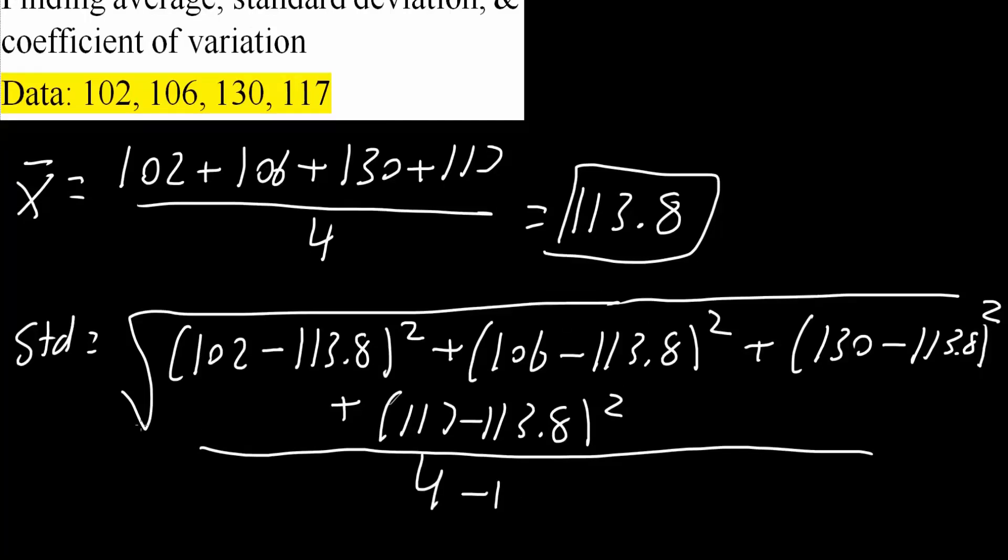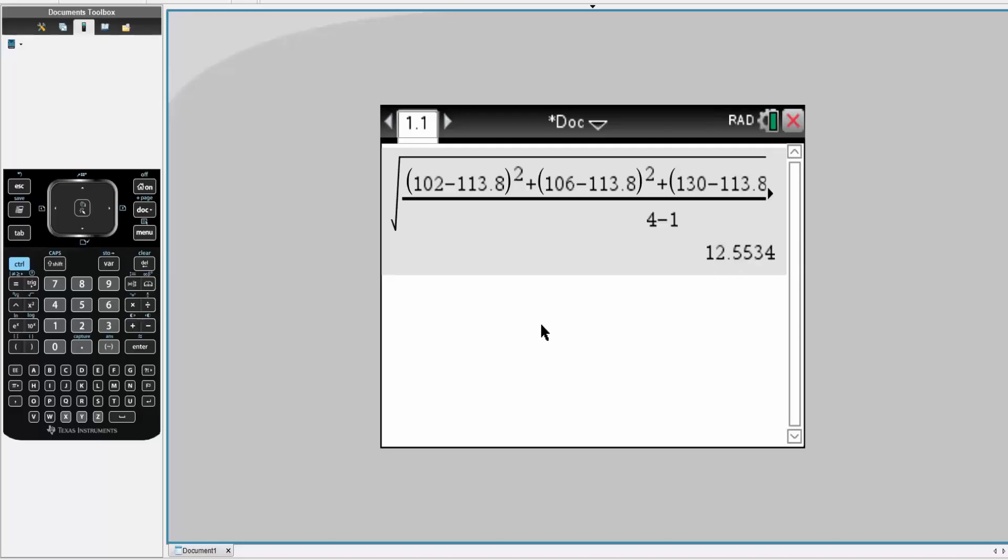And just as an important note, this square root applies to also the 4 minus 1. And so essentially, it will look something like this. So we do this big square root, 102 minus 113.8, close parenthesis, squared, divided by 4 minus 1.